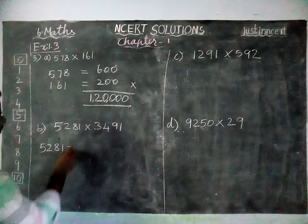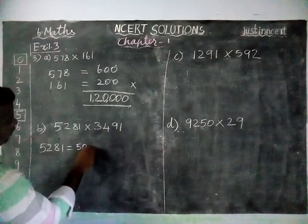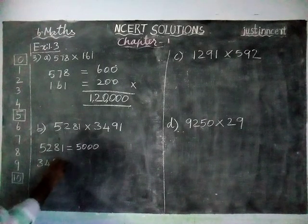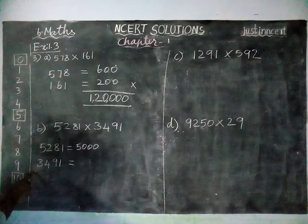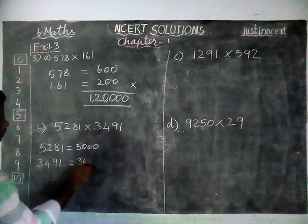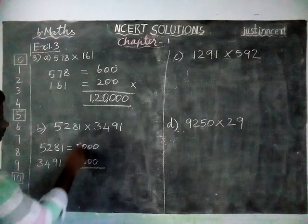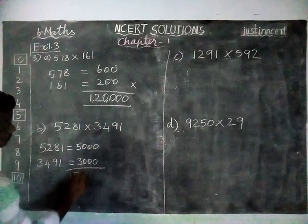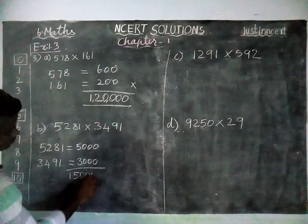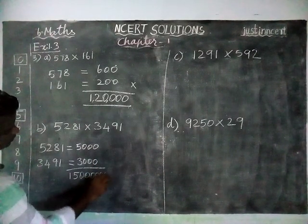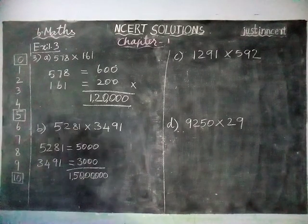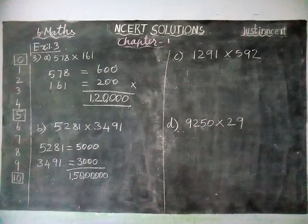We will get 5000 for the first number. Next, 3,491, when we round off to nearest 1000, we will get 3000. 5 times 3 is 15. There are 1, 2, 3, 4, 5, 6 zeros. So that's 1 crore 50 lakhs.